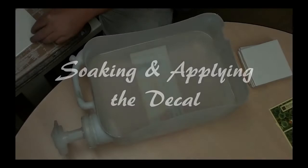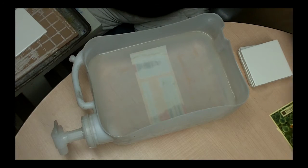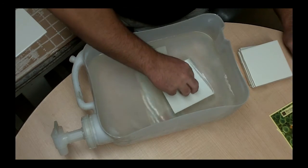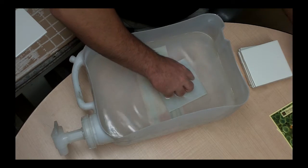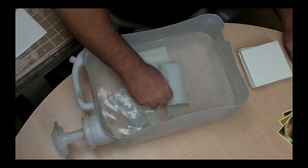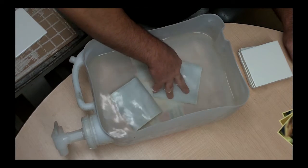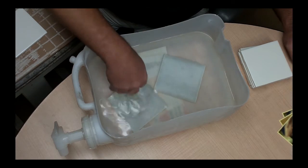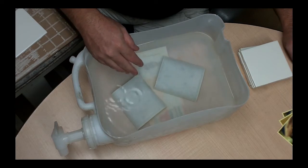This will be soaking and applying the decal. Now we just have a tub here of water that we use. We do this so we can do multiple at a time. Other people like to use a spray bottle full of water. This makes it so they can spray the decal manually and then put it on. This method for us is just a lot easier. So you let them soak for a little bit.